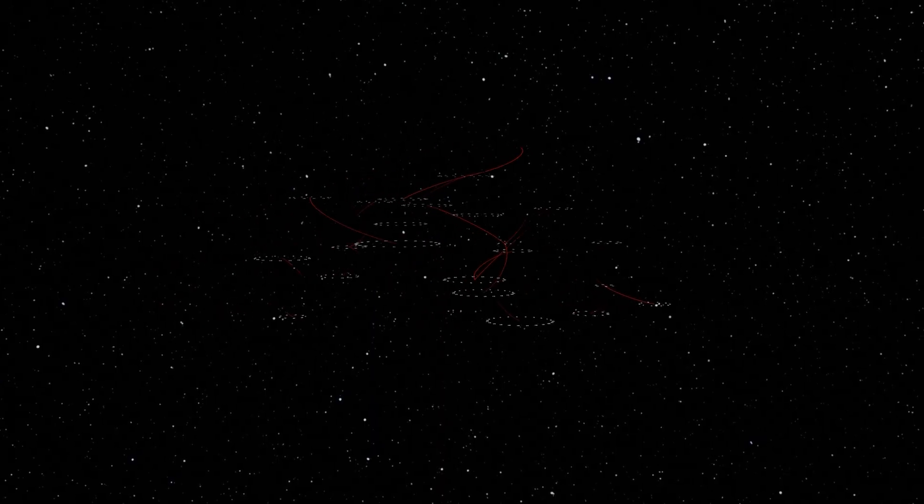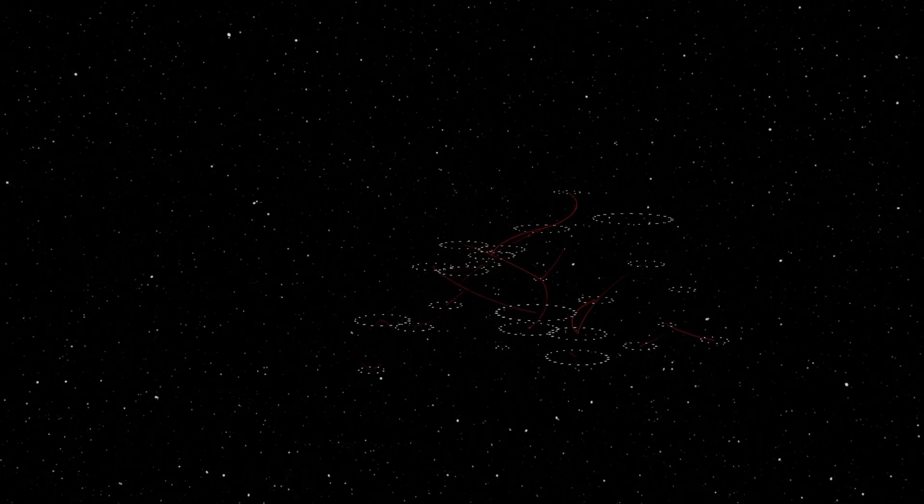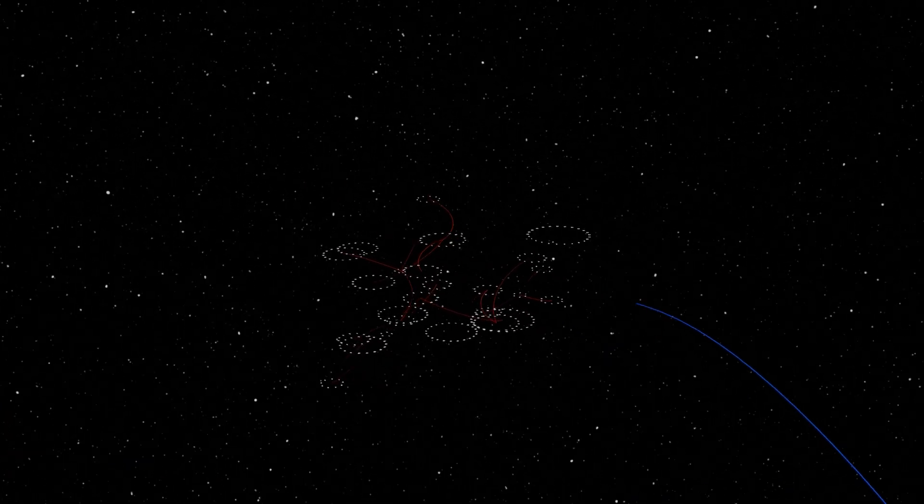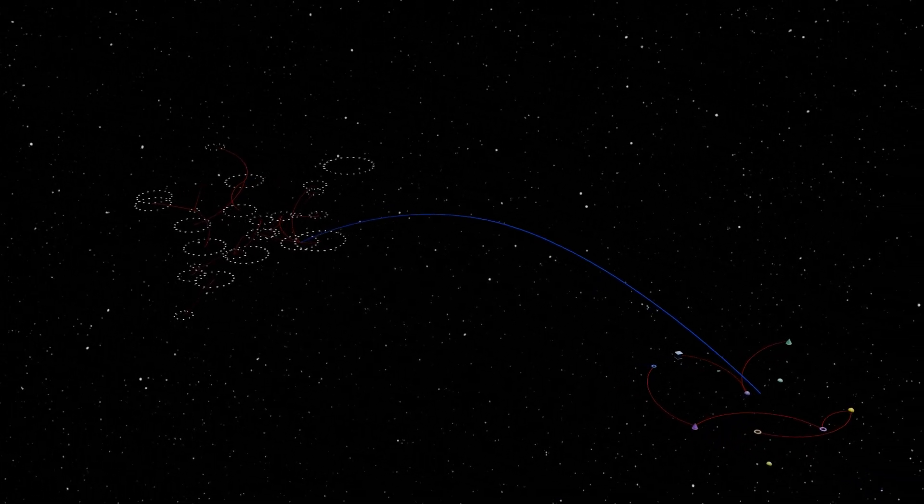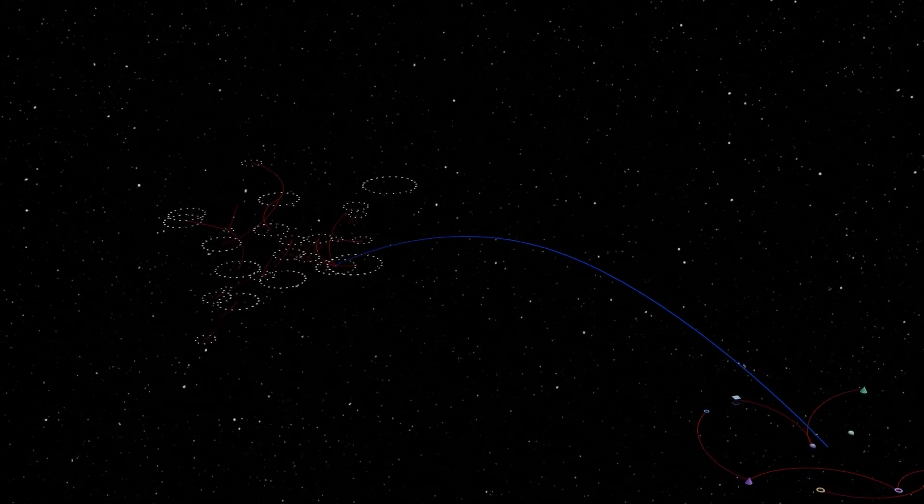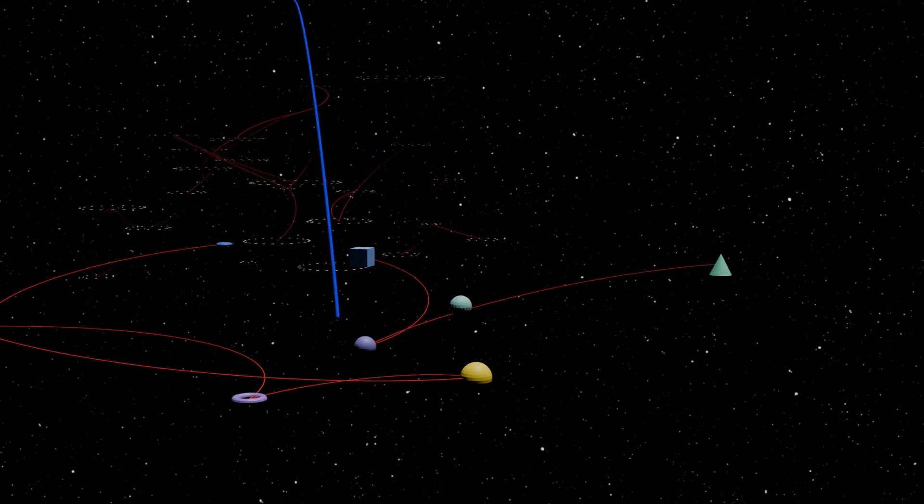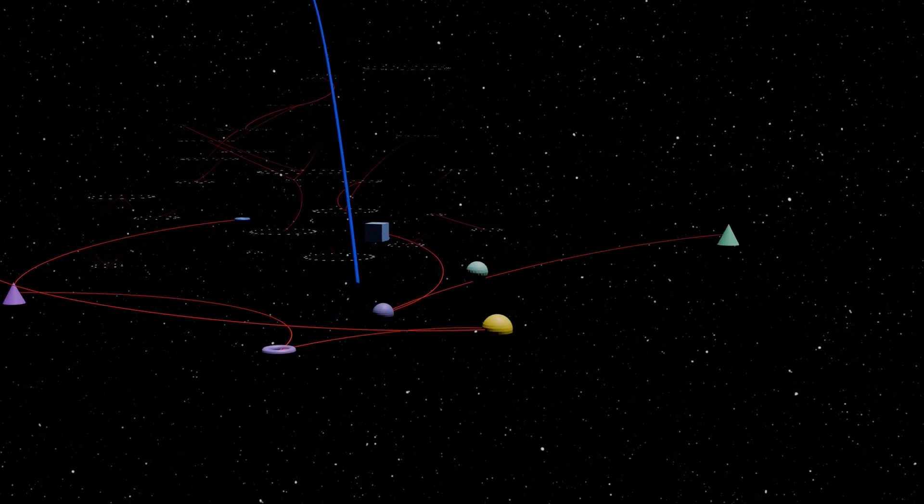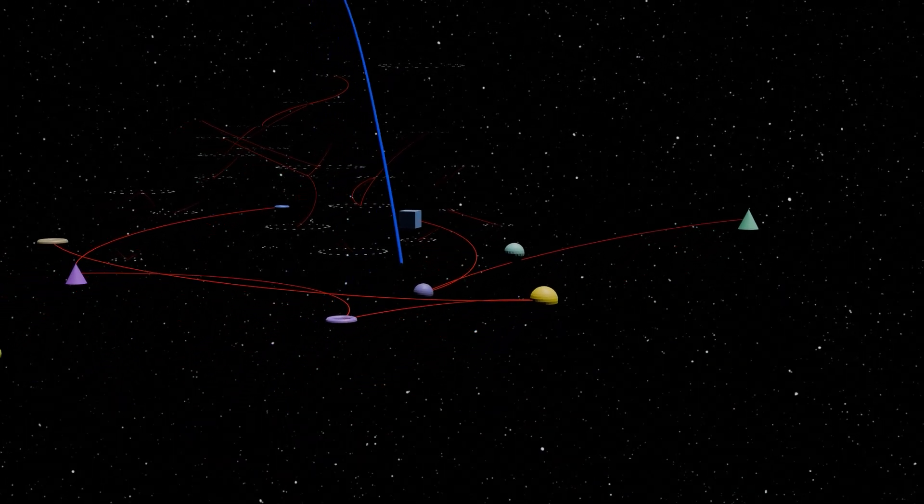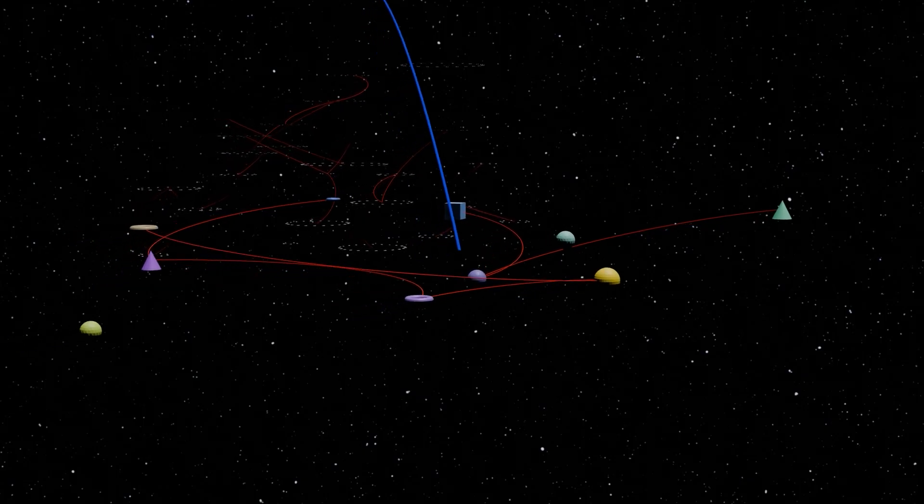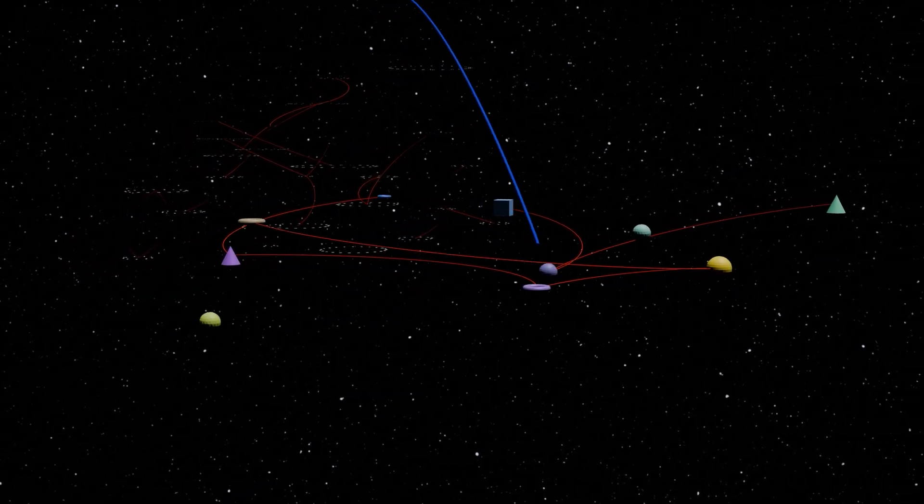But why stop there? We can also start talking about the universe in which categories sit, and the relationships between different categories. This is the so-called category of small categories. This is the final level of abstraction that I'll cover today, although there's certainly more levels that you can add, but it gets a little bit confusing at some point, and it's just a bit too much for this video right now.